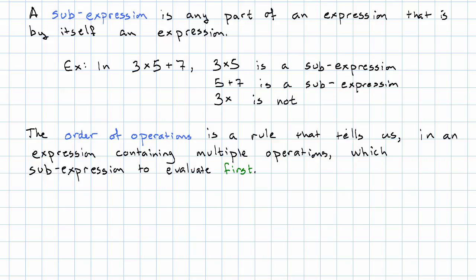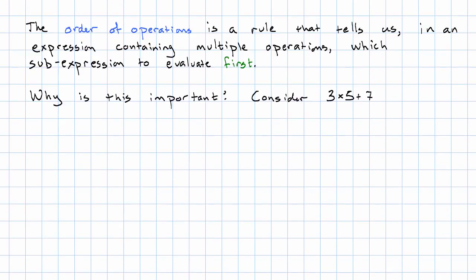Why is this important? Well, consider the expression 3 times 5 plus 7. If we evaluate 3 times 5 first, well 3 times 5 plus 7, evaluate 3 times 5, that's 15, and then evaluate our new expression 15 plus 7, that's 22.